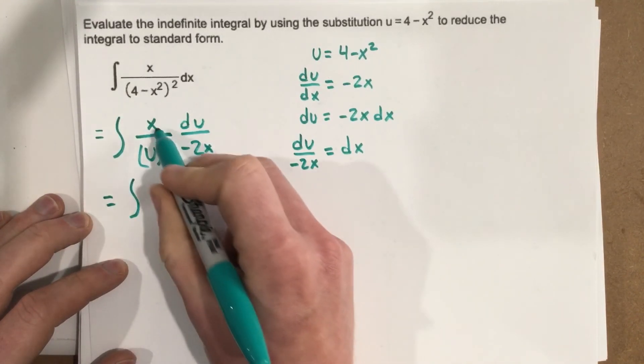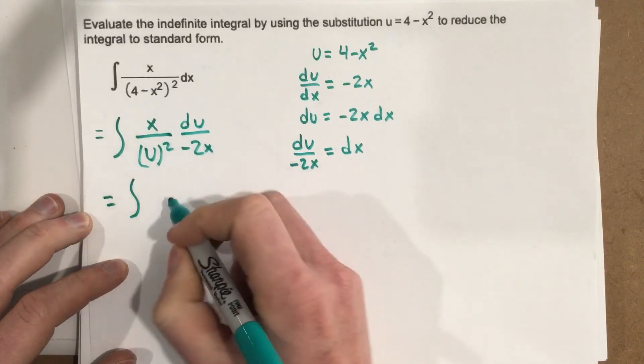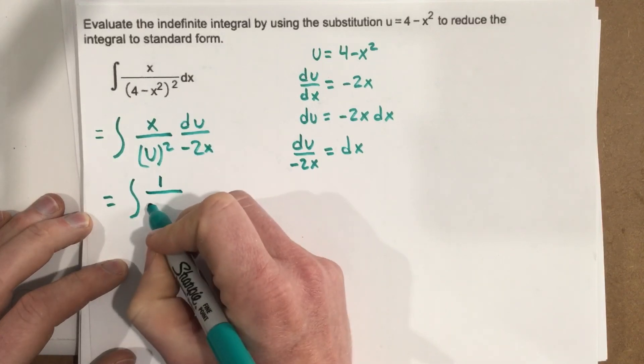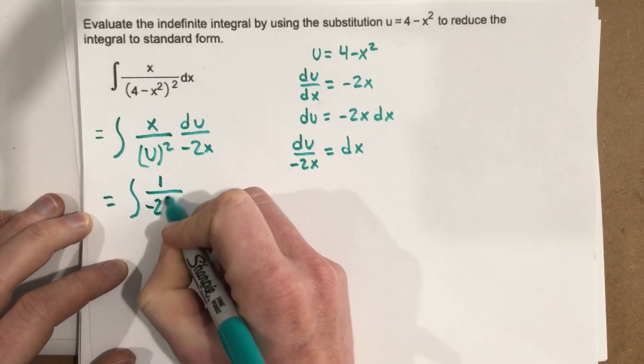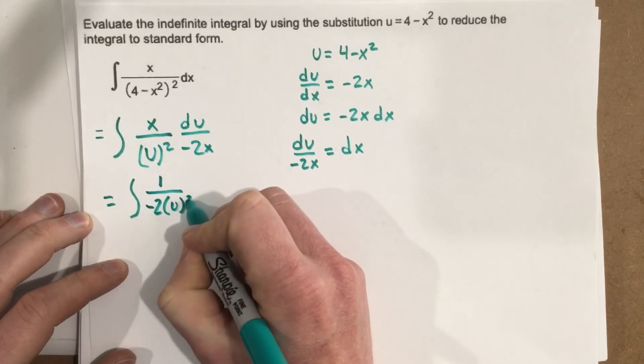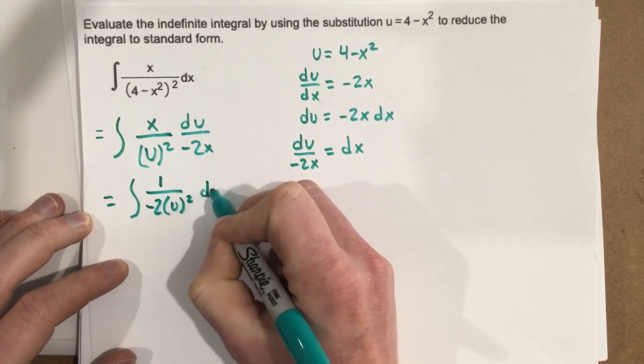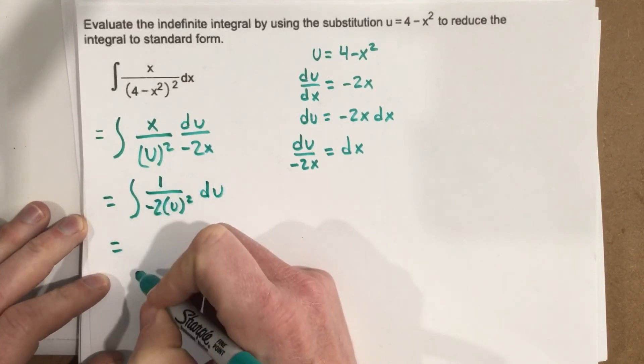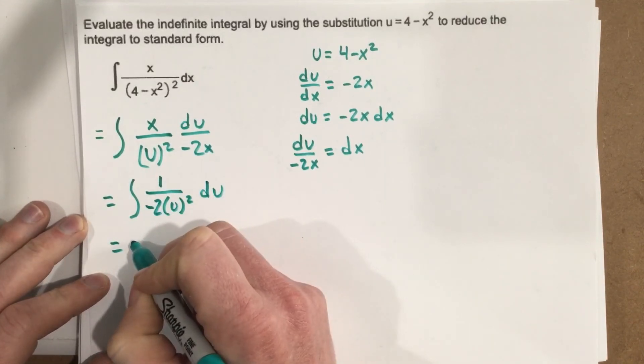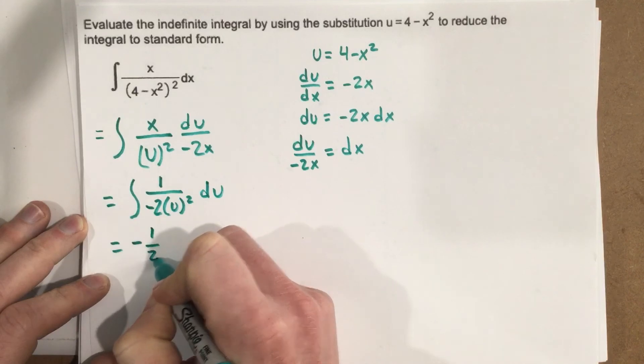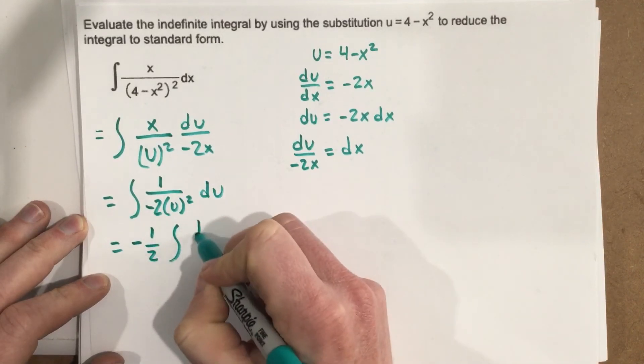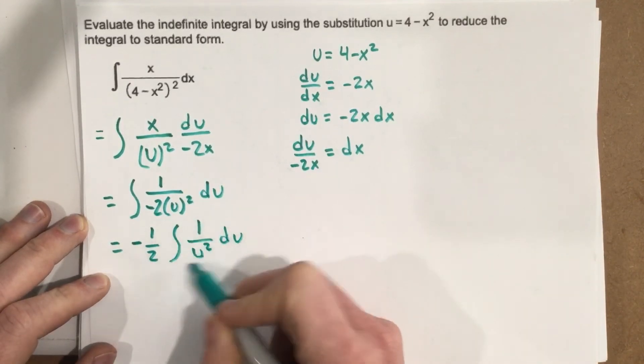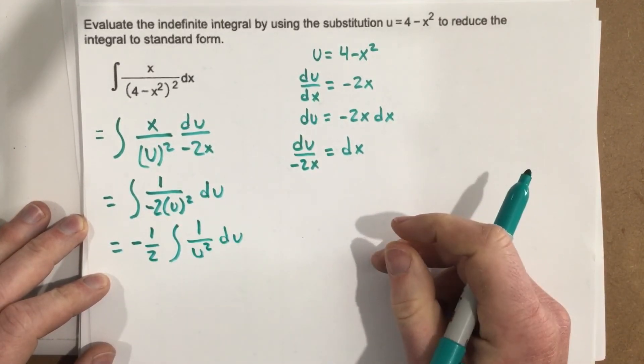So that would just be when the x's cancel, that gives you 1 over negative 2u squared du. Then we can go a little farther, we can take out this negative 1 half, put it outside. So you can see that this is now a much easier integral to deal with.